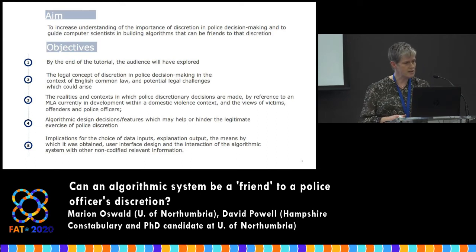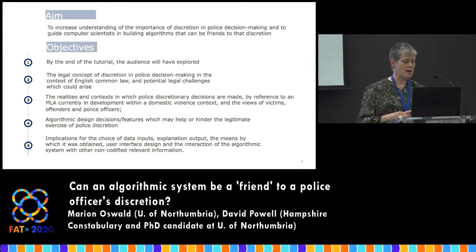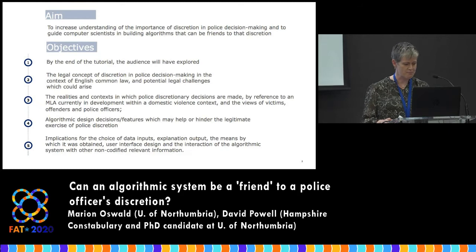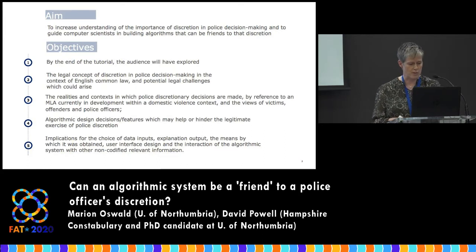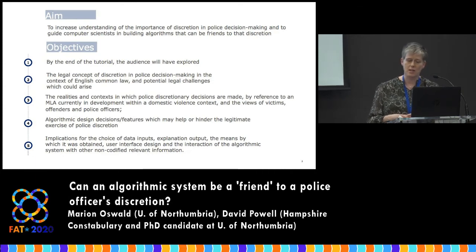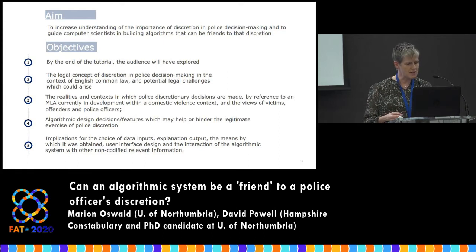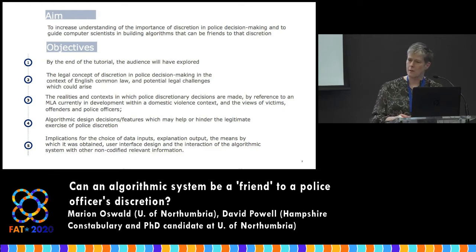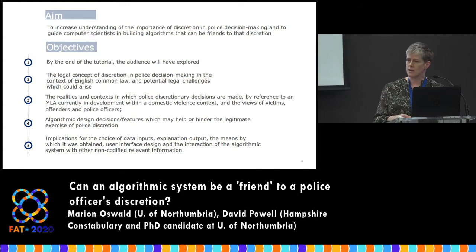In this tutorial we're going to look at the legal concept of discretion within police decision making, and think about the realities and contexts in which discretionary decisions are made. We're going to look at a real machine learning algorithm in development within a domestic violence context, and then ask you in groups to think about design decisions and features which may help or hinder the legitimate exercise of police discretion — including the implications for the choice of data inputs and explanation methods.